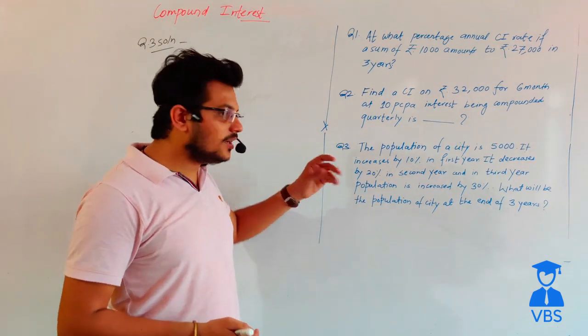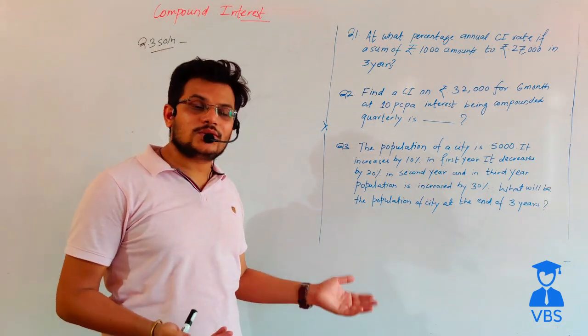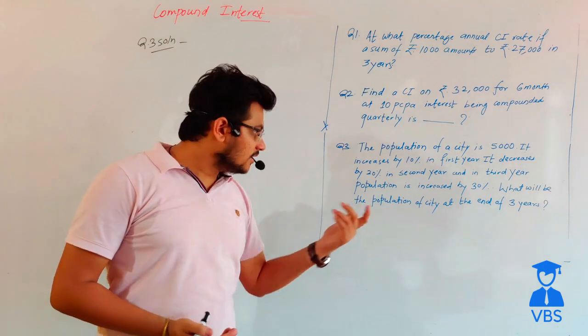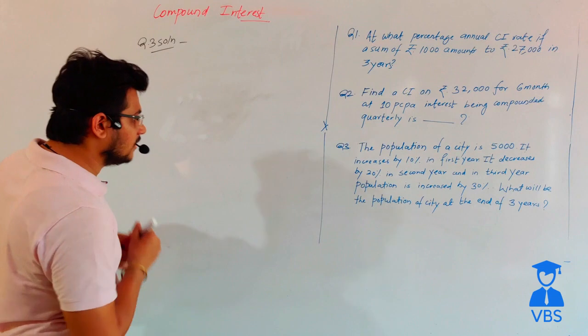Since it is not quarterly or half-yearly but annually, we need to determine the number of years. This means using the compound interest formula.